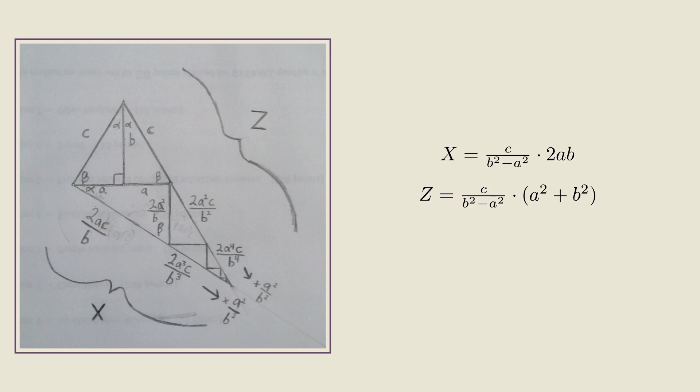So similar, in fact, that if we take their quotient, these two factors will cancel out, and we'll be left with just 2AB over A squared plus B squared. And then comes the realization that X over Z is just the sine of 2 alpha, opposite divided by hypotenuse for this 2 alpha angle here.